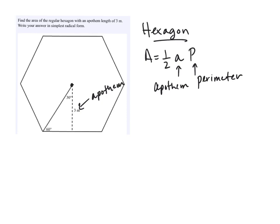Another way you can find the area of a regular polygon—remember that regular means all sides and angles are congruent—is you can find the area of one of these triangles and multiply it by the number of triangles.